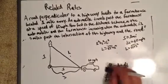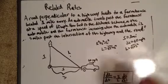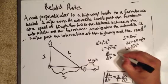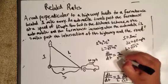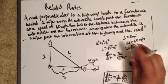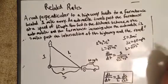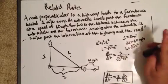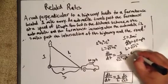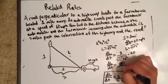Now we write it all out. dL/dt = (s/L)·(ds/dt) = 3 / √(1² + 3²) × 60 = 3 / √10 × 60 = 180 / √10.